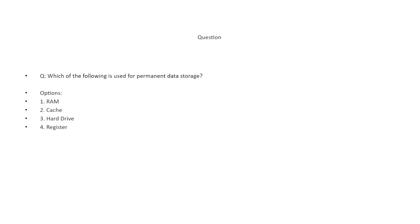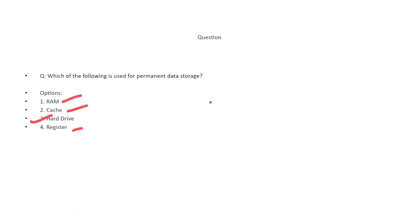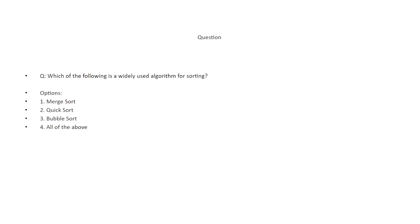Which of the following is used for permanent data storage? The options are: RAM, cache, hard drive, and register. RAM is temporary memory, cache is also temporary, and registers cannot store data permanently — so the correct answer is hard drive.